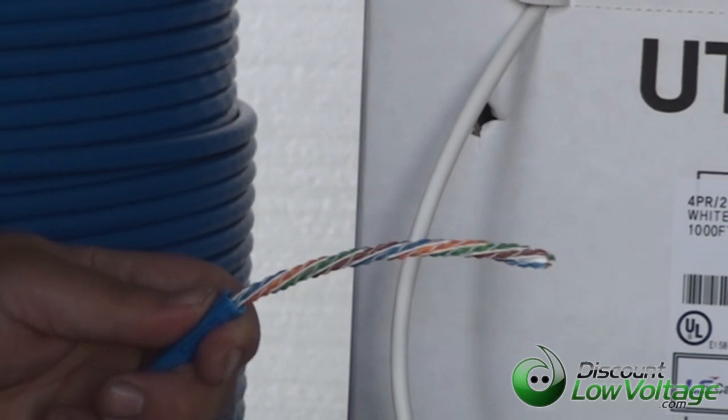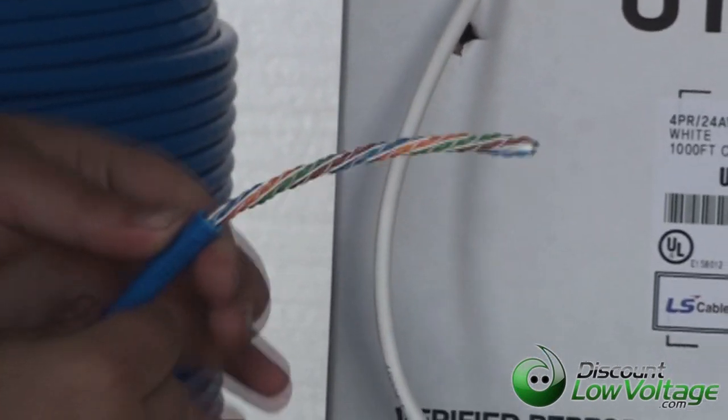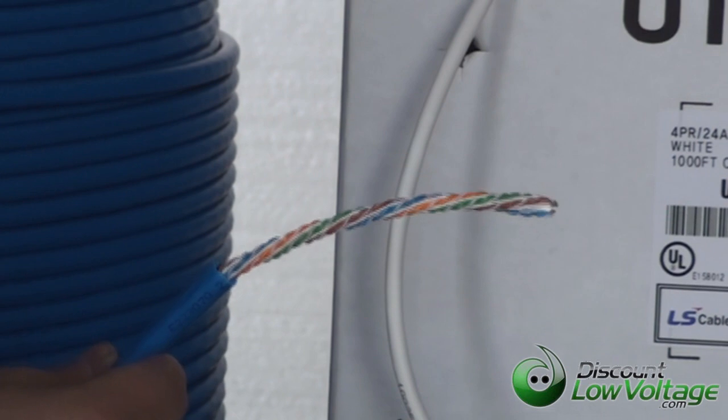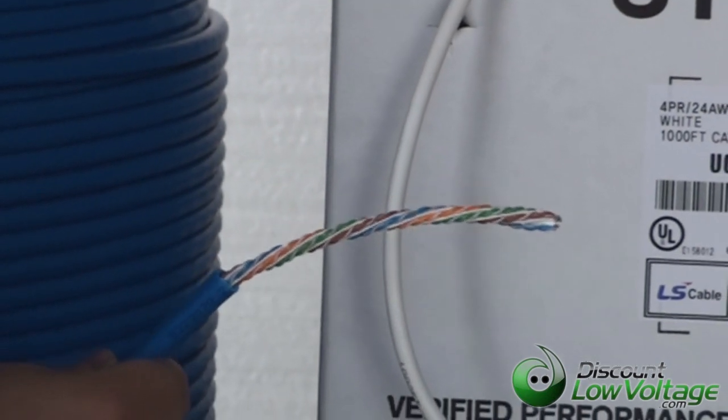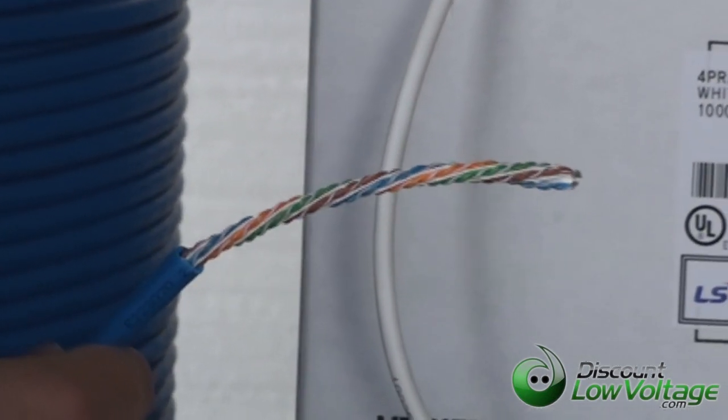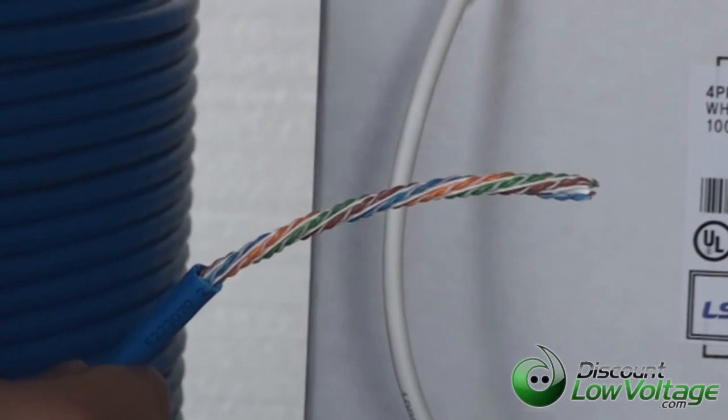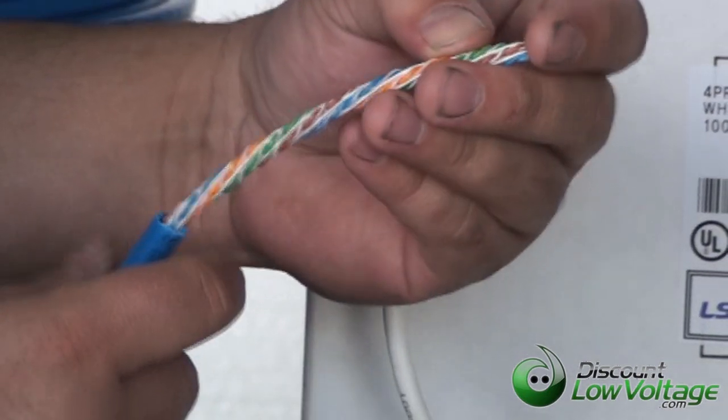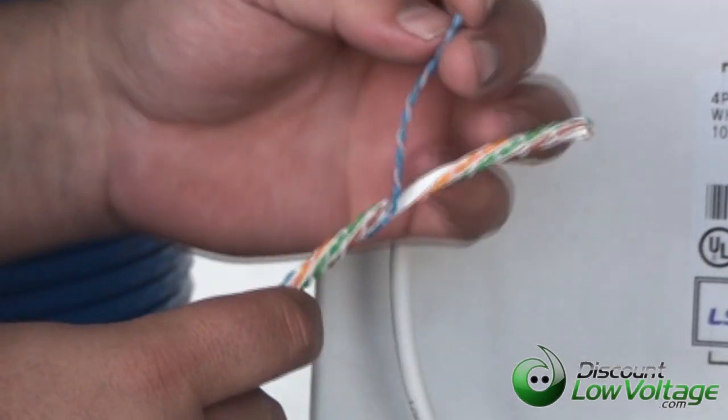Now underneath the jacket we have all the pairs that are really twisted, even curled very nicely, so you can get the best speed for your copper network. And Category 6 supports speeds of 10 gig up to 100 meters.